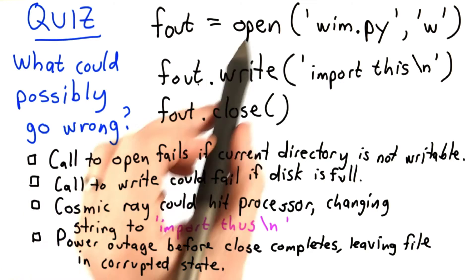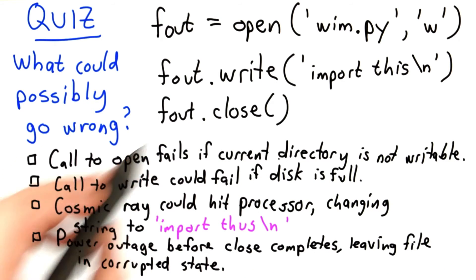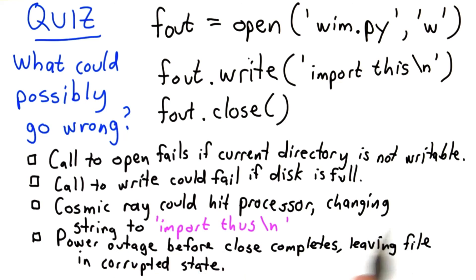The choices are: the call to open fails if the current directory is not writable; the call to write fails if the disk is full; a cosmic ray hits the processor at the wrong time, changing the string from import this to import thus; there's a power outage before the fout close completes, leaving the file in a corrupted state.